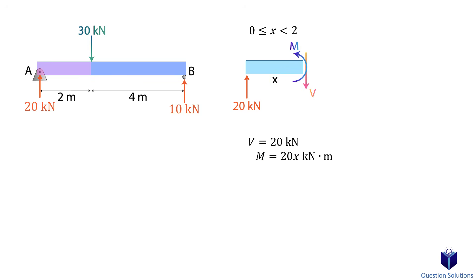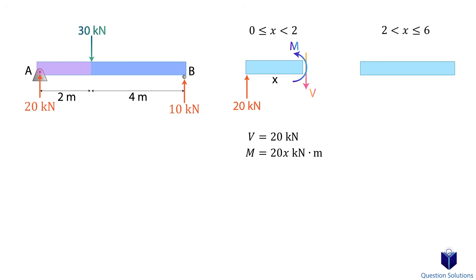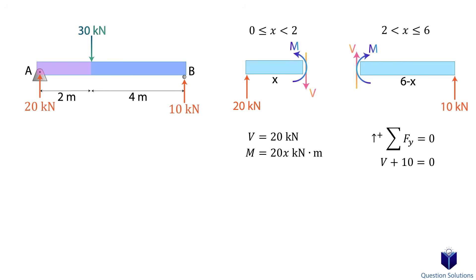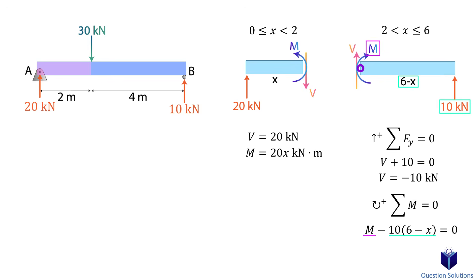Now let's draw the next segment, from greater than 2 m to 6 m. If the previous section had length x and the whole beam is 6 m, the length of this section is simply 6 minus x. We have the shear force, the moment, and at the other end the 10 kN force. The 30 kN force is not included because we are looking at the beam from greater than 2 m to 6 m — wherever we make a cut, we don't include the force at that cut. Writing the equilibrium equation for y-axis forces gives us the shear force, and then we write the moment as a function of x: the moment plus the reaction times the perpendicular distance (6 minus x). Let's simplify.